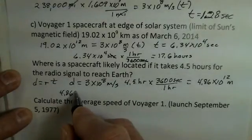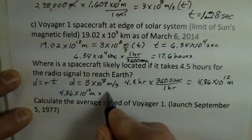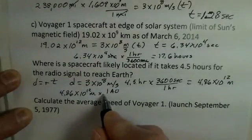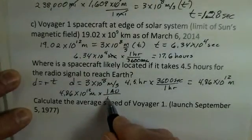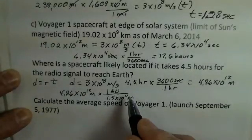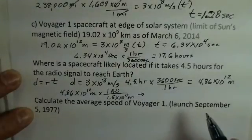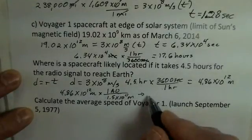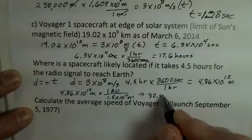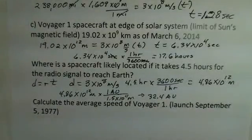So I'm going to convert units here again. 4.86 times 10 to the 12th meters. And roughly, one astronomical unit is 1.5 times 10 to the 11th meters. This is the average distance of the Earth to the sun. When you do that division, apply this conversion factor, you find 32.4 astronomical units.